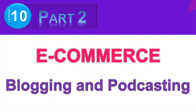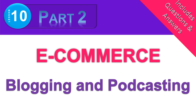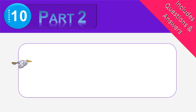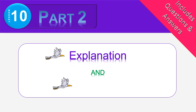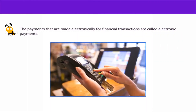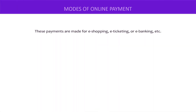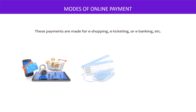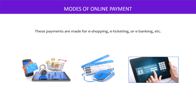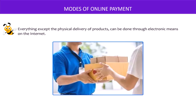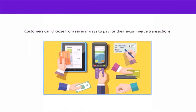Lesson number 10: E-commerce blogging and podcasting, part 2. This session includes explanation and then an exercise at the end. Let's begin the session by talking about modes of online payments. Payments that are made electronically or financial transactions are called electronic payments. These payments are made for e-shopping, e-ticketing, or e-banking, etc. Everything except the physical delivery of products can be done through electronic means. On the internet, customers can choose from several ways to pay for their e-commerce transactions.